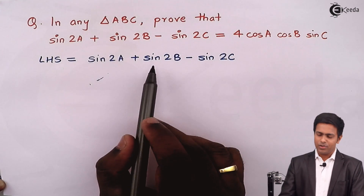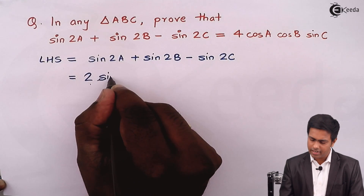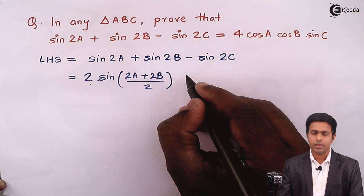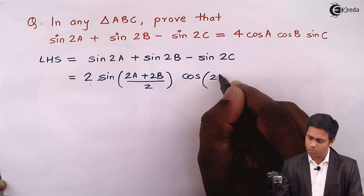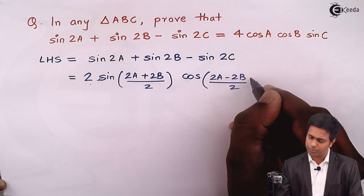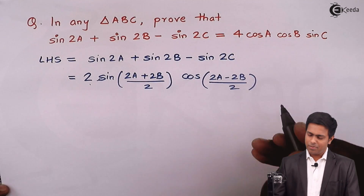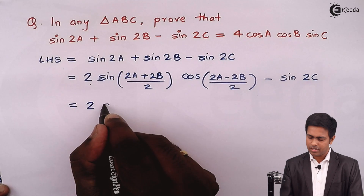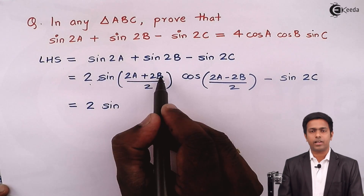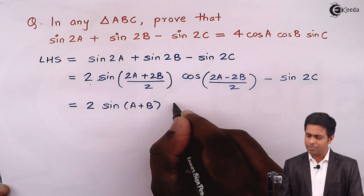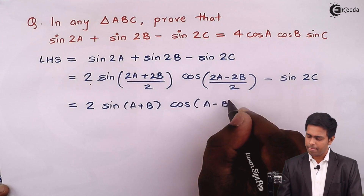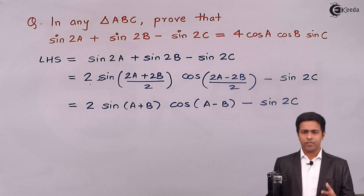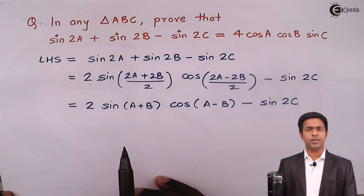Using the factorization formula, sin2A plus sin2B equals 2 times sine of (2A plus 2B)/2 into cos of (2A minus 2B)/2, minus sin2C. Simplifying: the 2s cancel to give us 2 times sine of (A plus B) into cos of (A minus B), minus sin2C. We have now arrived at the form involving sine(A plus B).